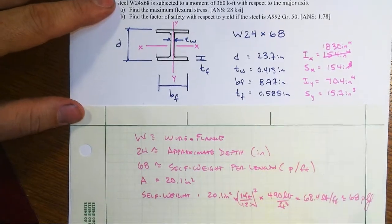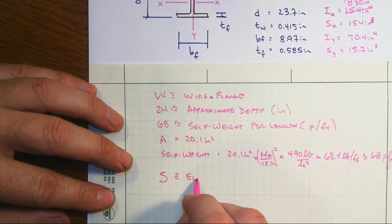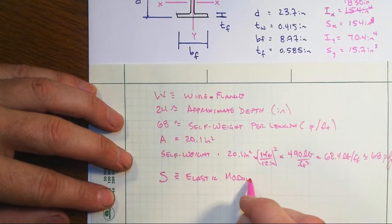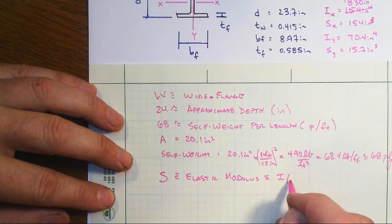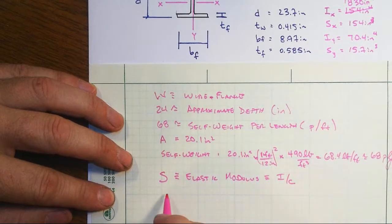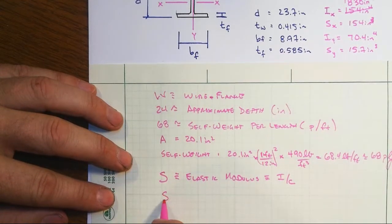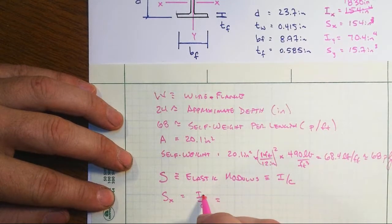And then you've got these capital S's. Well, these S's are the elastic modulus for the cross-section. And that's decreed to be I divided by C. Now, I is of course what we just saw up here. And so Sx would be equal to Ix over the C value that corresponds to that axis.